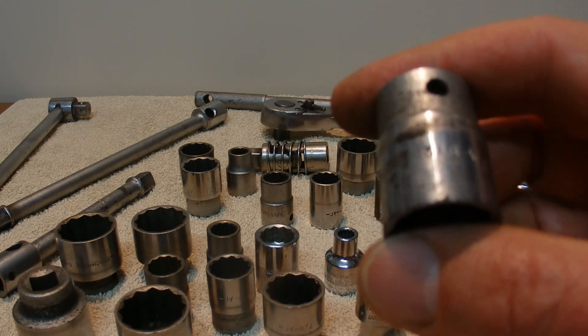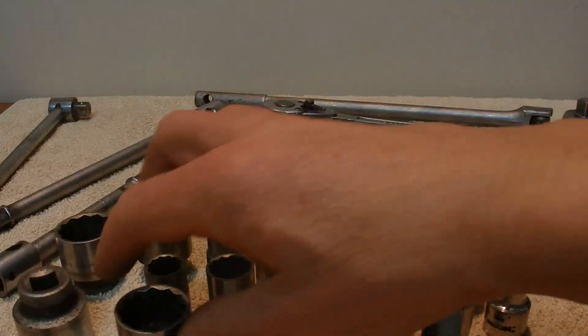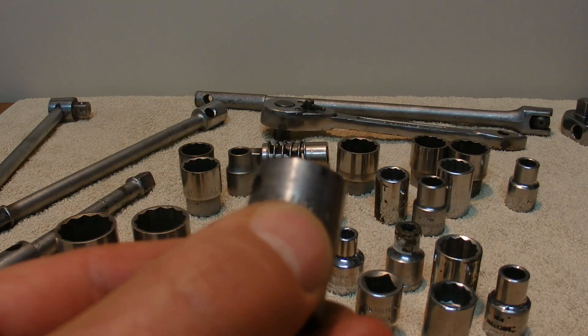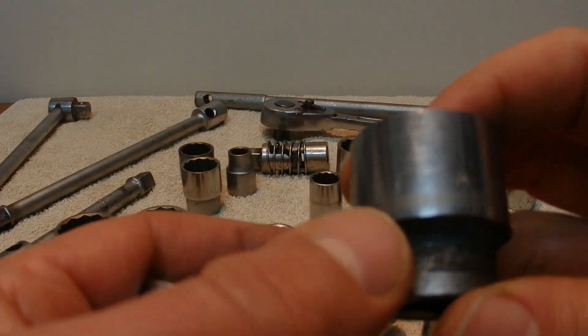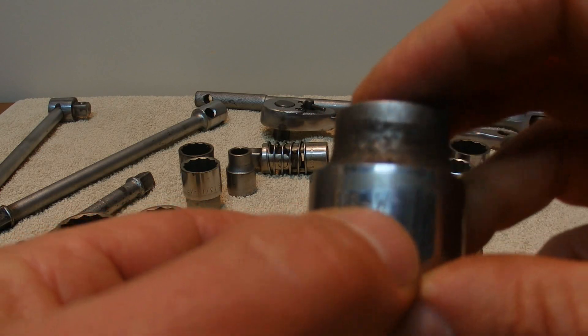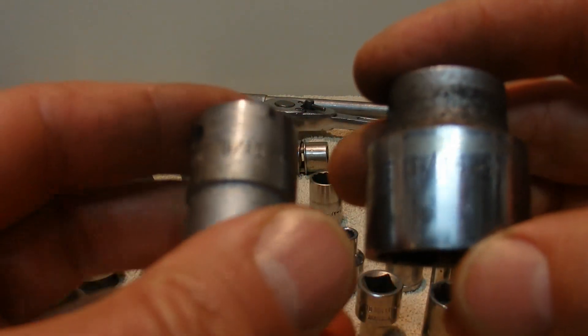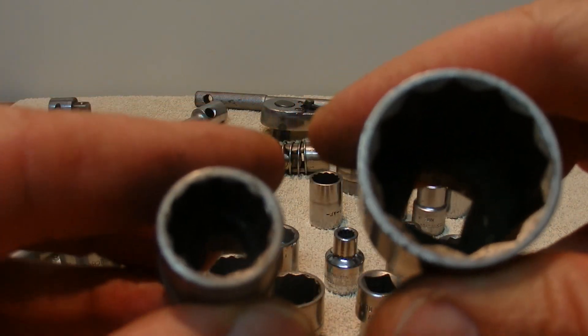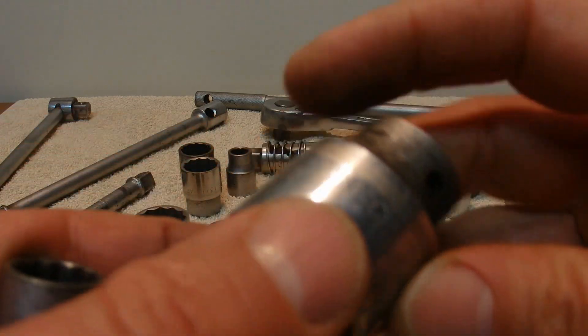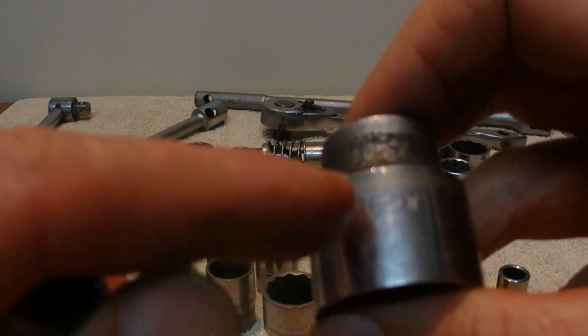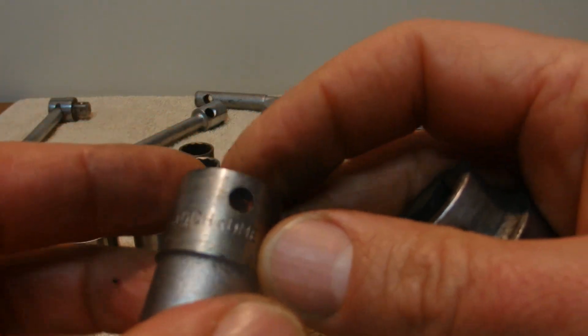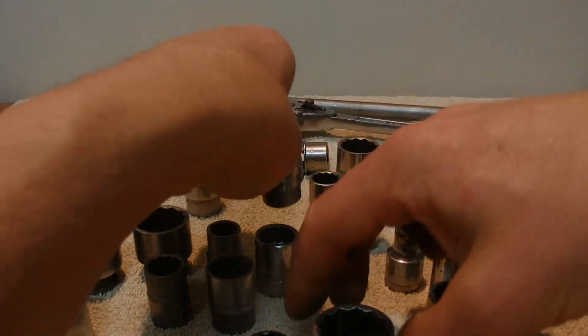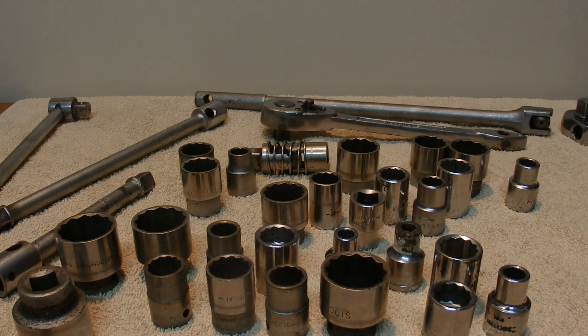Now this is interesting. Now this is 9/16ths of an inch AF across face, and this is also 9/16ths of an inch Sidchrome, but it's the Whitworth. So they're the same size on paper, but they're a different way of measuring them, across face versus Whitworth. And you can see there, the huge difference between those two sockets, both 9/16ths. This one 9/16ths of an inch, this one's the Whitworth, the big one, and the small one is the across face AF measurement.